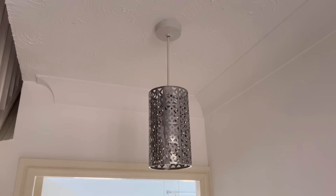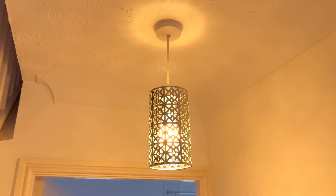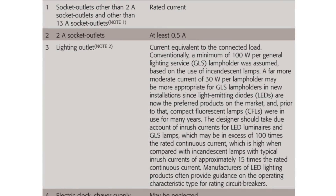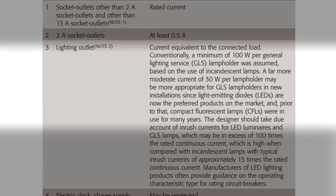There's a really interesting modification to the table in the Design Guide brought in with the latest update to the second amendment, which interestingly doesn't feature yet in the On-Site Guide or Guidance Note 1. It reads: conventionally a minimum of 100 watts per general lighting service lamp holder was assumed based on the use of incandescent lamps. A far more moderate current of 30 watts per lamp holder may be more appropriate for GLS lamp holders in new installations, since LEDs are now the preferred product on the market.